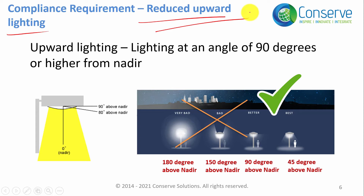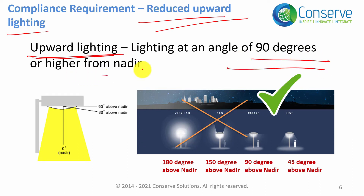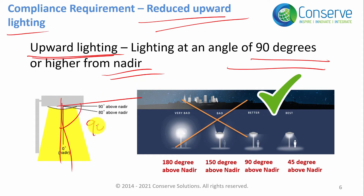The next parameter is upward lighting. Upward lighting is lighting that goes above 90 degrees from the nadir. The nadir is a perpendicular line drawn from the lighting fixture straight down to the ground. So the light must be contained within 90 degrees of the nadir and must not go beyond that boundary.